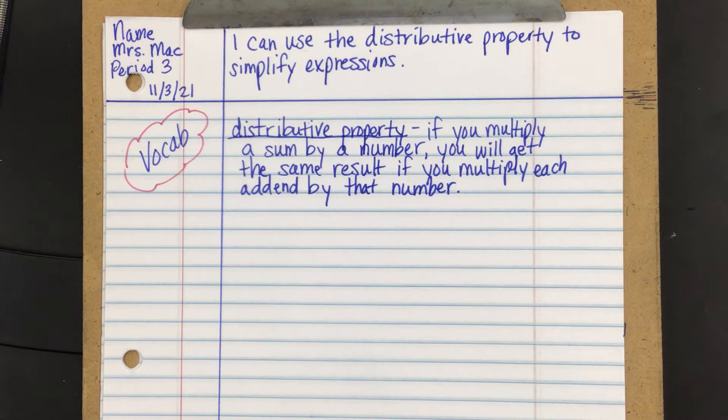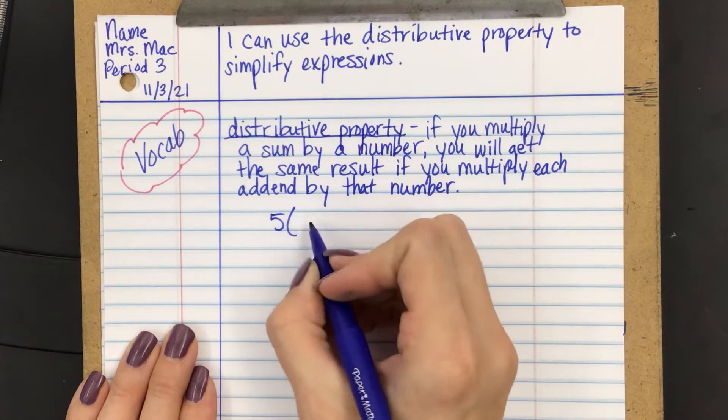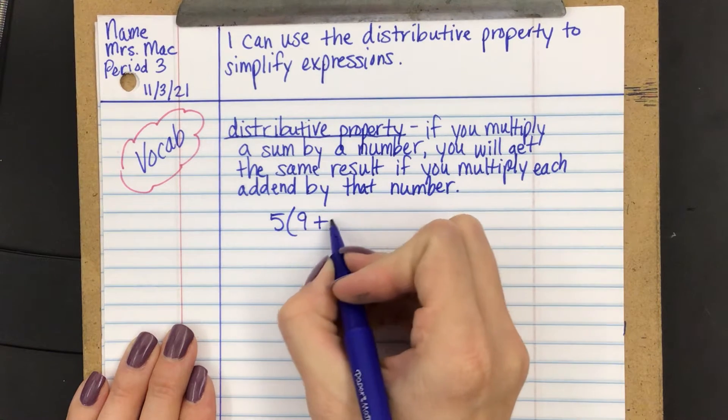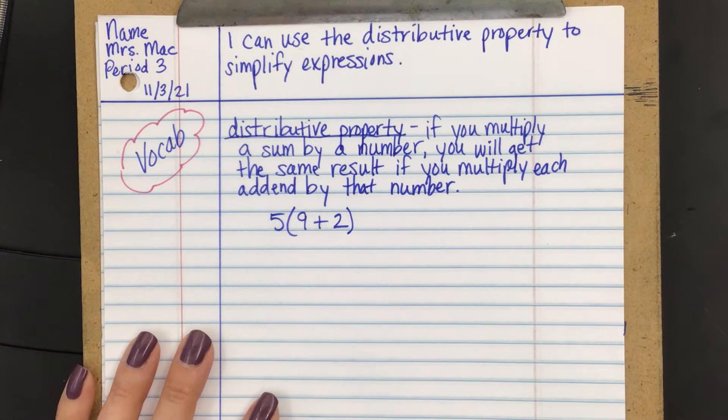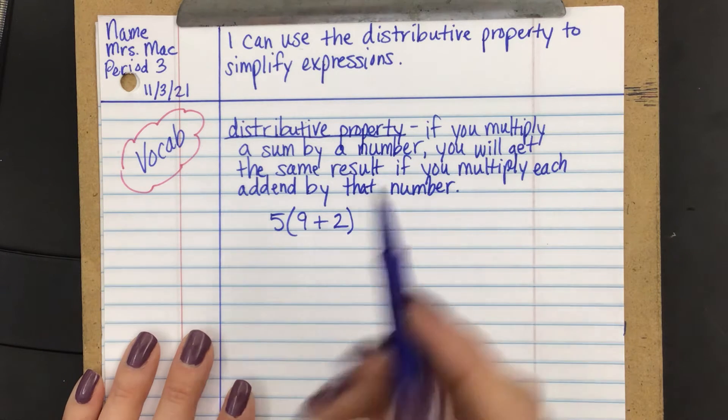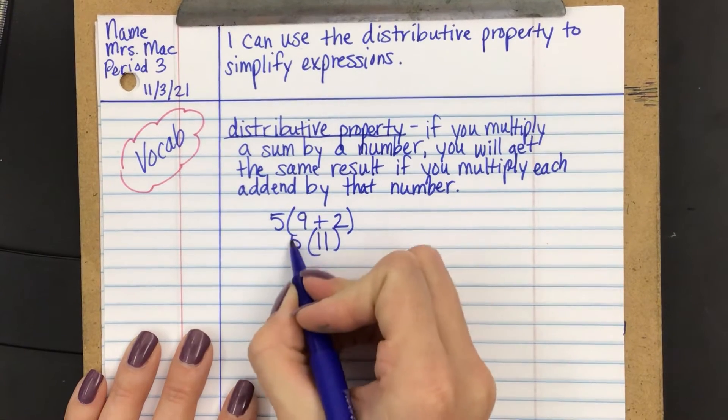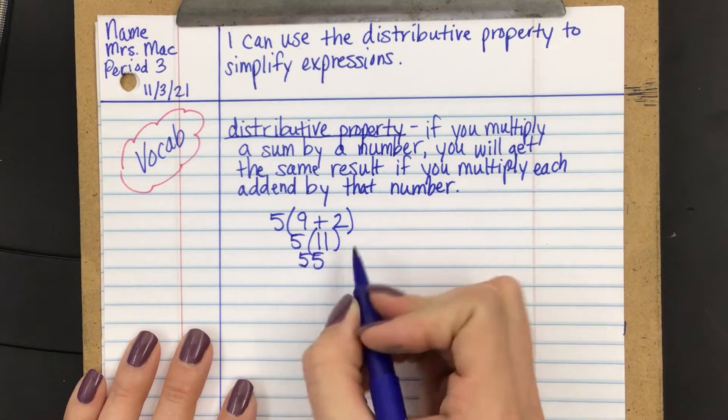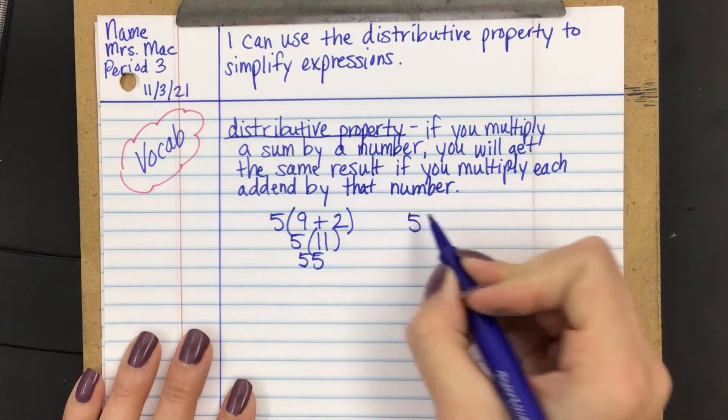So let's take a look at what you've learned in the past. So we're looking at things that have some grouping here, like this. Now, the order of operations has taught you that you should always simplify your grouping first. So if we do that, then this is 11, and then we multiply by 5 and we get 55.